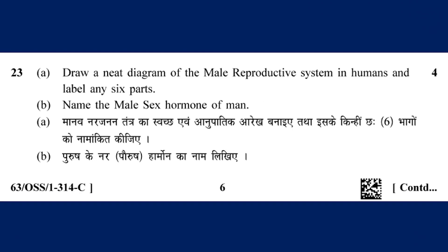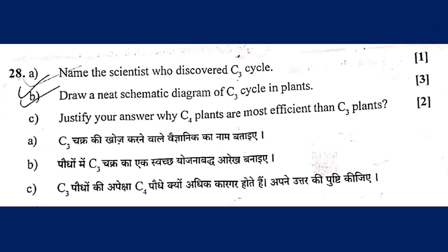Draw a neat diagram of the male reproductive system in humans and label any six parts. Name the male sex hormone. The male sex hormone is testosterone. For photosynthesis, we have to teach the C3 cycle.